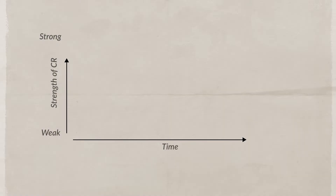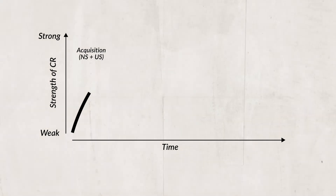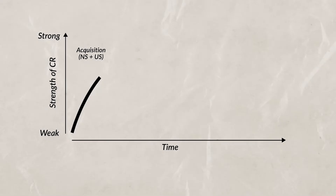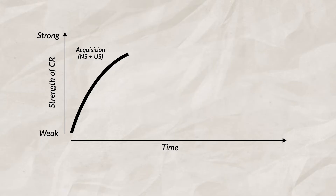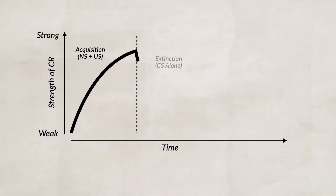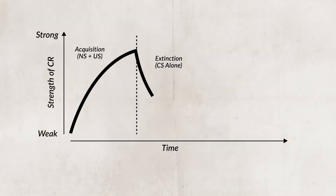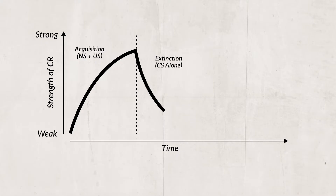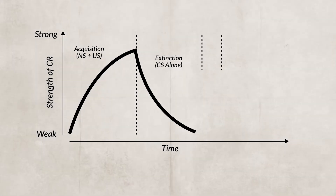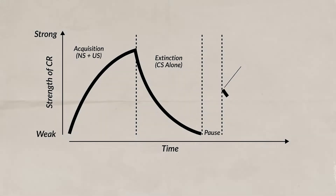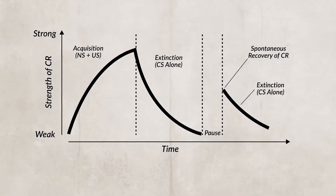We can see this process graphically. When acquisition is occurring, we have our neutral stimulus paired with our unconditioned stimulus. As time goes on, the strength of the conditioned response intensifies — in Pavlov's case, this was the bell and food. We then can see that if we have just the conditioned stimulus by itself without the unconditioned stimulus, extinction occurs, and as more time passes, the strength of the conditioned response decreases. However, if we pause for a period of time, we can see spontaneous recovery of the conditioned response. But if we have the CS alone again, extinction starts all over.